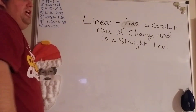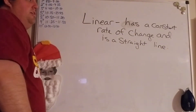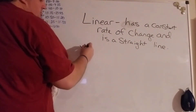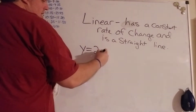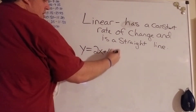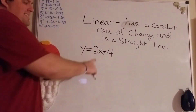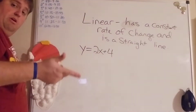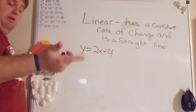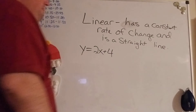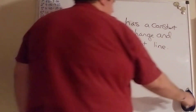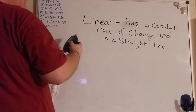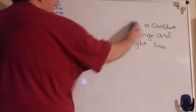That's our constant rate of change. For example, I know that the equation y = 2x + 4 is linear because it has a constant rate of change of 2 — it's going to rise 2 and run 1. But sometimes it's not so easy. For example, if I have an equation that's not in slope-intercept form, how do I know if it's linear?